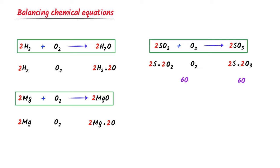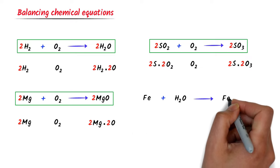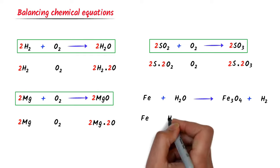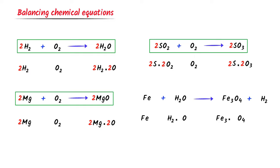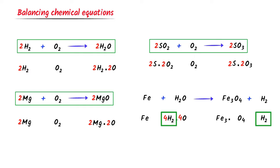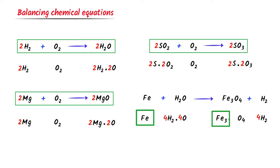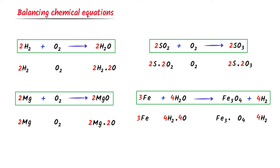Now let me show you a trick to balance a difficult equation: Fe + H₂O → Fe₃O₄ + H₂. There are four oxygen on the right and one on the left, so I put 4 with H₂O — oxygen is balanced. Two times four equals eight hydrogen on the left; I put 4 with H₂ on the right — hydrogen is balanced. There are three iron on the right and one on the left, so I place 3 with Fe. The balanced equation is: 3Fe + 4H₂O → Fe₃O₄ + 4H₂.